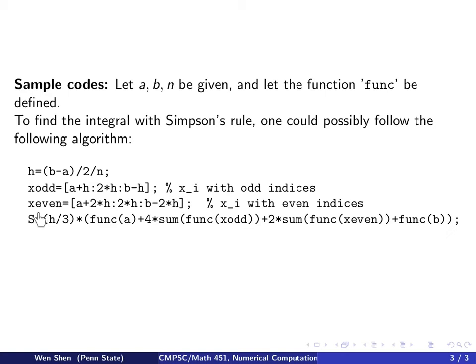And in the same way, I define all the even x indices. So it starts from a plus 2h, that's x2, and then increases by 2h, so jumps over 2 index until the end and not including the last point.